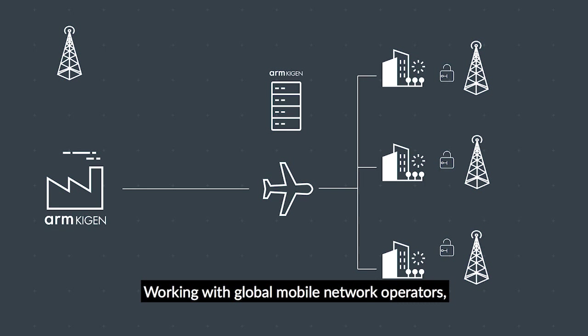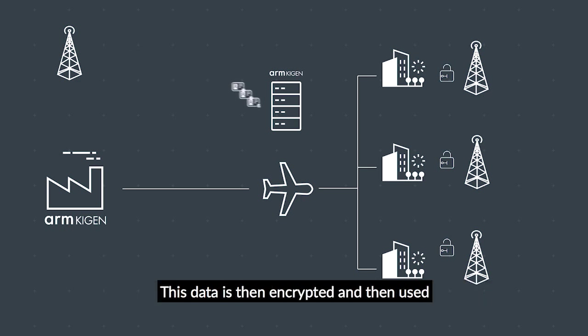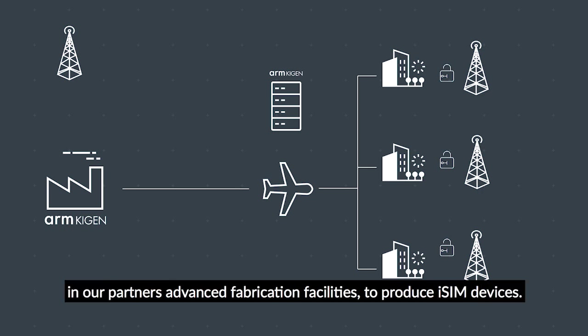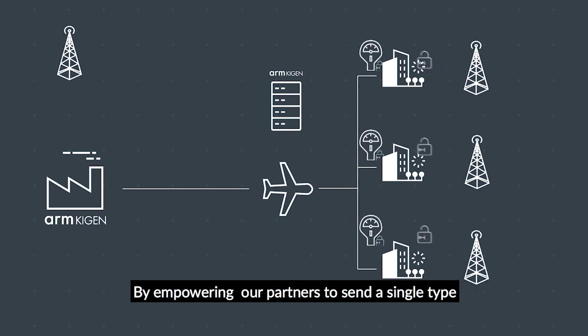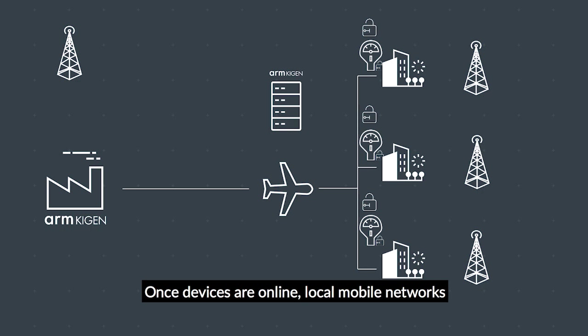Working with global mobile network operators, secret data to identify subscribers is sent to the secure server. This data is then encrypted and used in our partners' advanced fabrication facilities to produce iSIM devices. By empowering our partners to send a single type of smart connected stock globally, we allow OEMs to access new markets with ease. Once devices are online, local mobile networks are able to use their respective subscriptions.